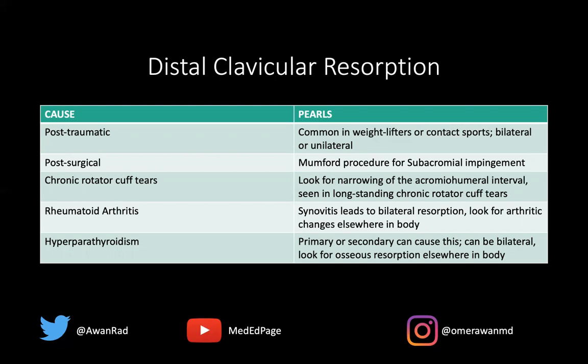It can be post-surgical. There's a surgery known as a Mumford procedure, which resects the distal clavicle as a cure for subacromial impingement — for patients predisposed to rotator cuff tears because the acromial-humeral space is narrowed. We want to open up and decompress that space, which is often done with a Mumford procedure. Chronic rotator cuff tears can also result in distal clavicular resorption because the acromial-humeral space is narrowed.